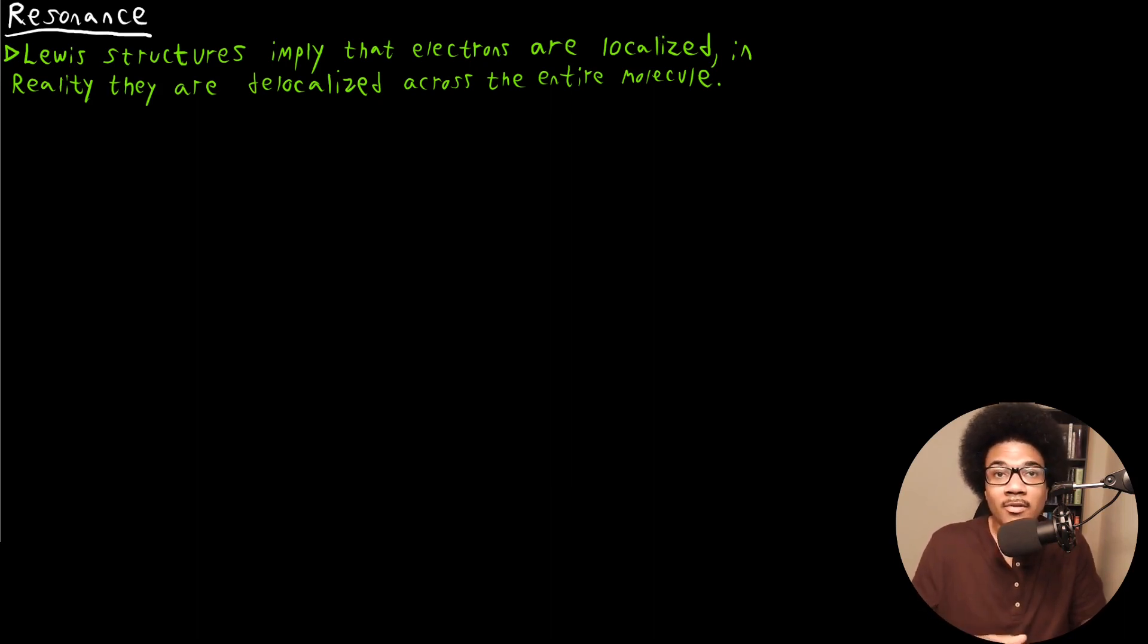But in reality, electrons are delocalized throughout the entire molecular framework, and they can technically be anywhere. There are certain regions of space that they are confined to, but those regions of space can stretch along multiple different atoms. And so that's not really captured just in the Lewis dot model alone. But one way that we make up for this deficiency in the Lewis dot model is with the concept of resonance.